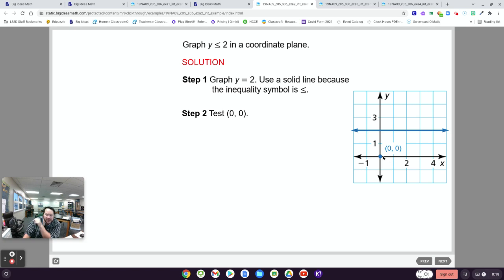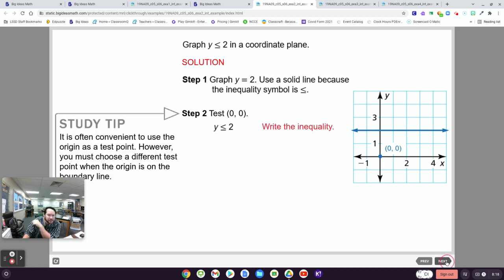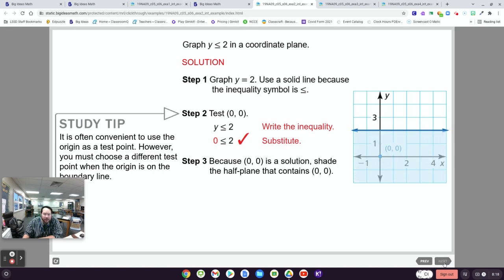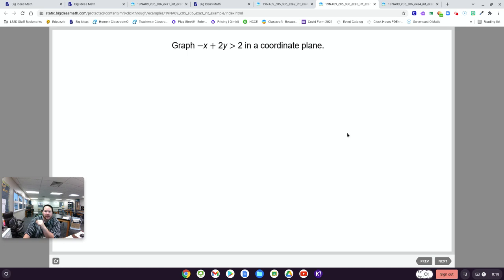So here you plug in 0, which is a good convenient point. You can pick any points you want. You get 0 is less than or equal to 2. That is true. So the side of this line where 0, 0 is on needs to be shaded in. There we go. So look at that. Make sure it all makes sense. We'll move on to the next question.